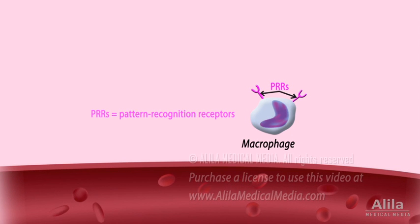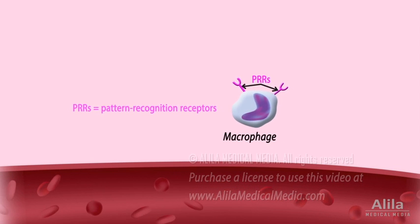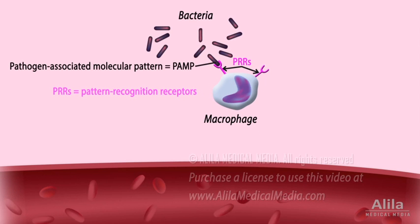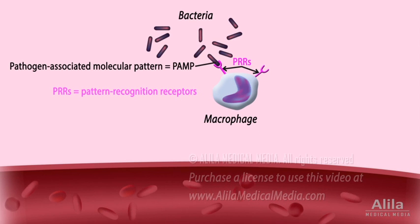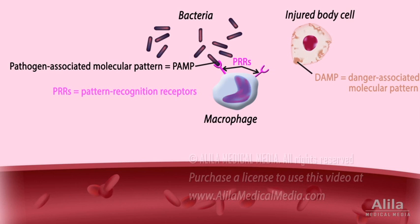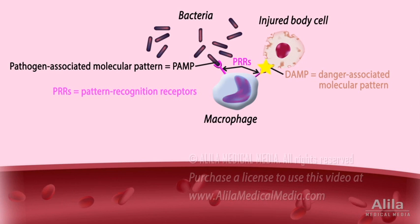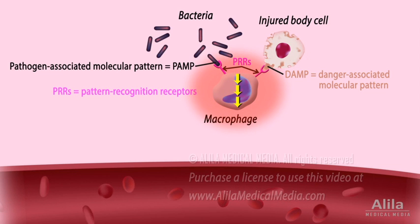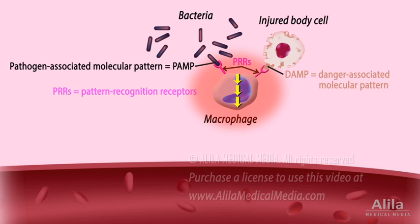Acute inflammation is initiated when tissue-resident immune cells, such as macrophages, encounter an inflammatory stimulus. This stimulus can be a pathogen, a toxin, or an injured host cell. Binding of the stimulus to its receptor on the immune cell triggers a signaling cascade that activates production of cytokines and other inflammatory mediators.